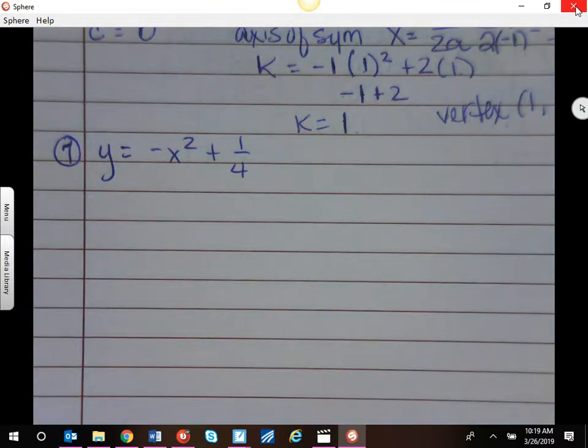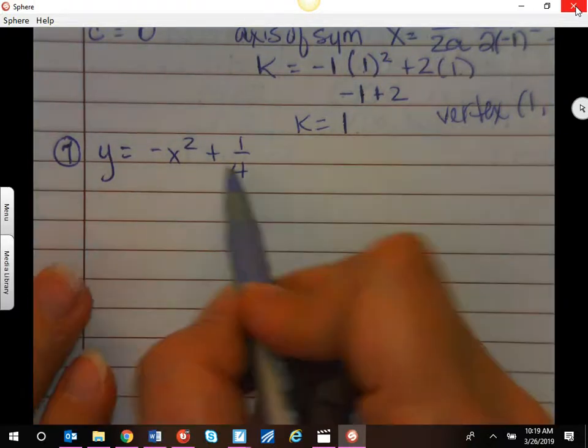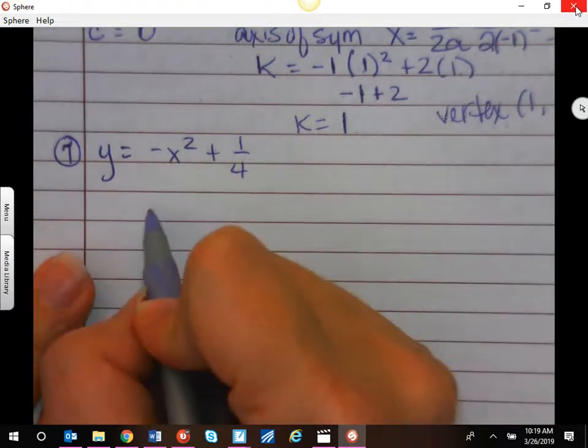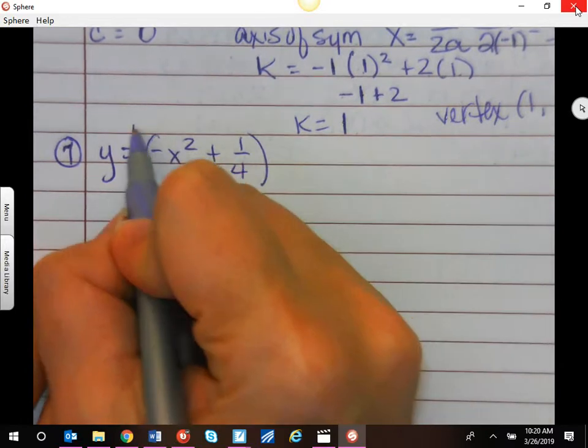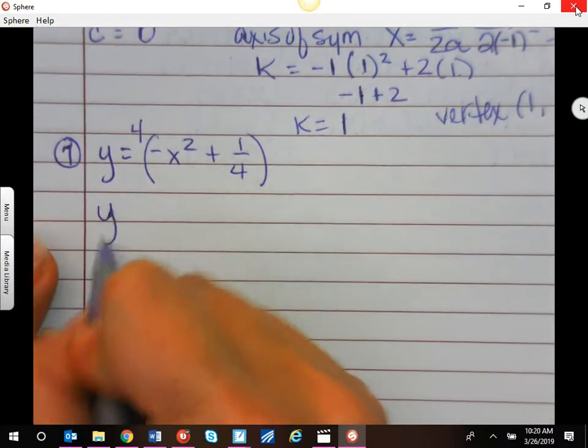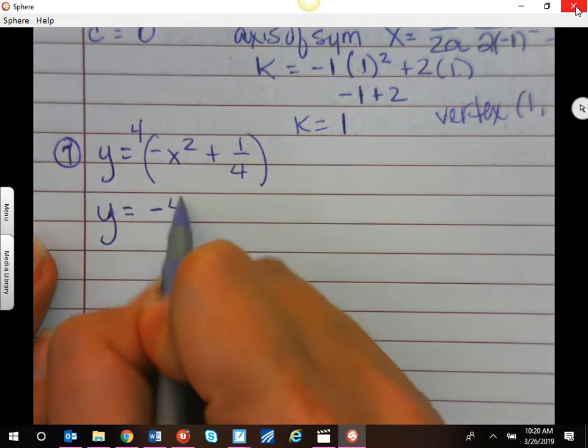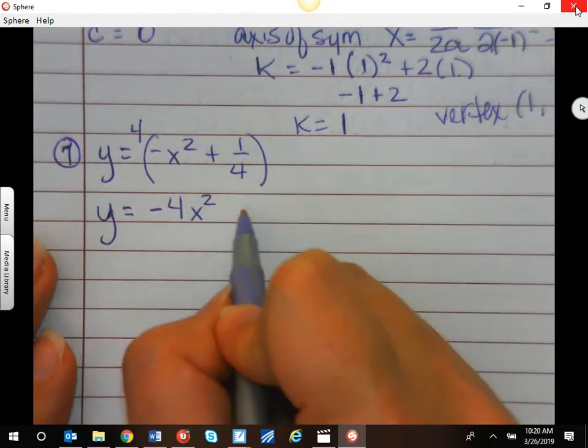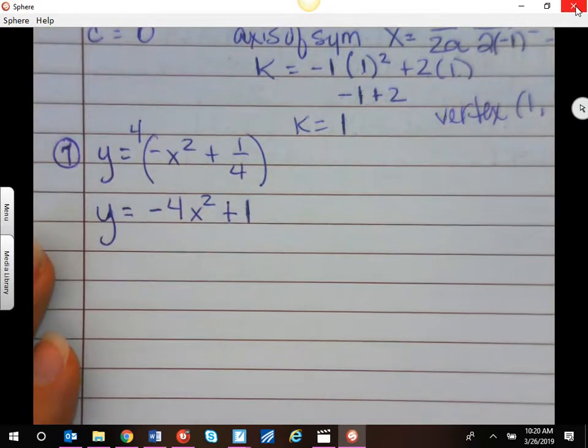We know how to get rid of a fraction. Multiply by the denominator, what's the denominator? So if I multiply this whole thing by 4, then I can rewrite it as negative 4x squared plus 1.